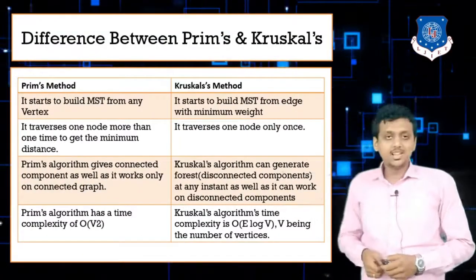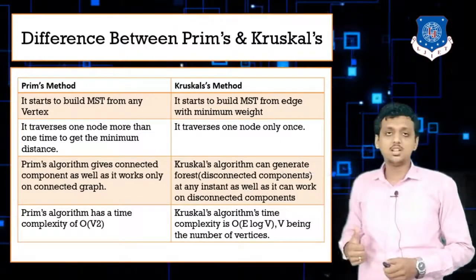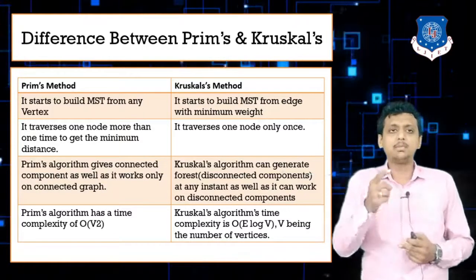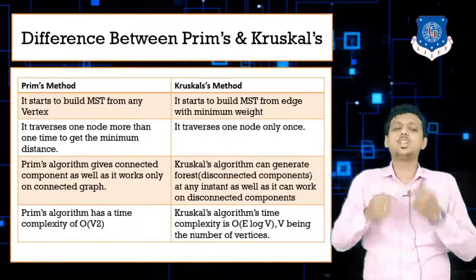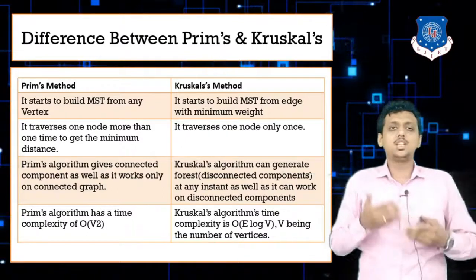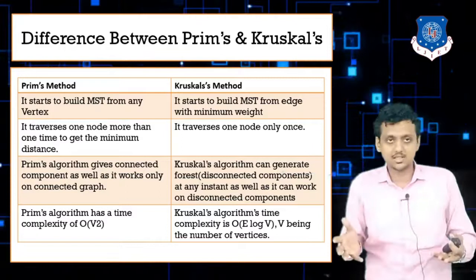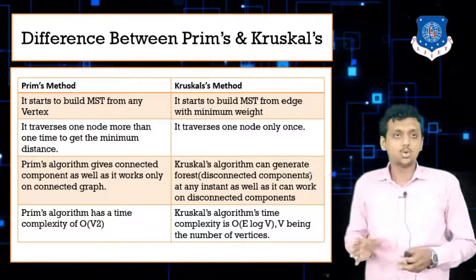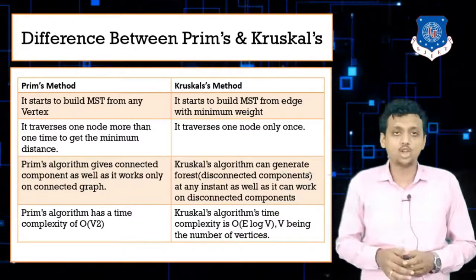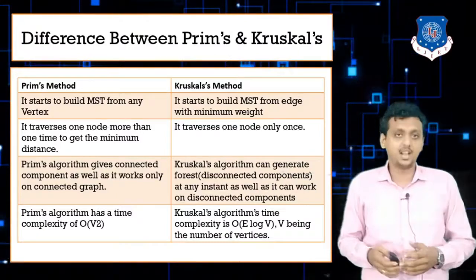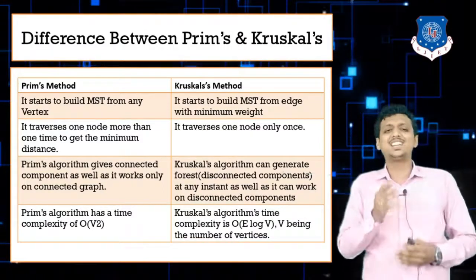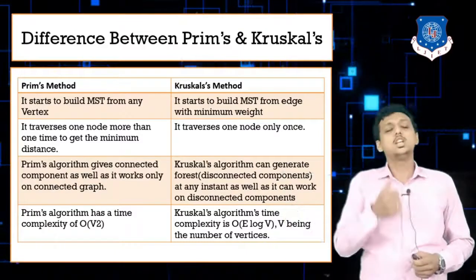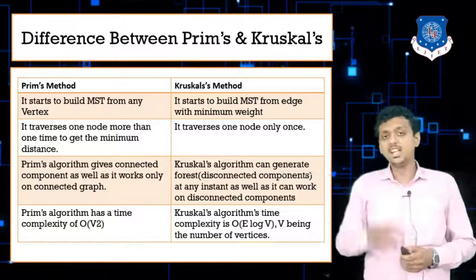Prim's algorithm starts building the MST with a vertex, while Kruskal's starts building the MST with the edge of minimum weight. In Prim's, you may need to traverse one node more than once to get the minimum distance. In Kruskal's, there is no possibility of traversing one node more than once. Also, Prim's algorithm works only for connected graphs, whereas Kruskal's algorithm can also be used for disconnected components.